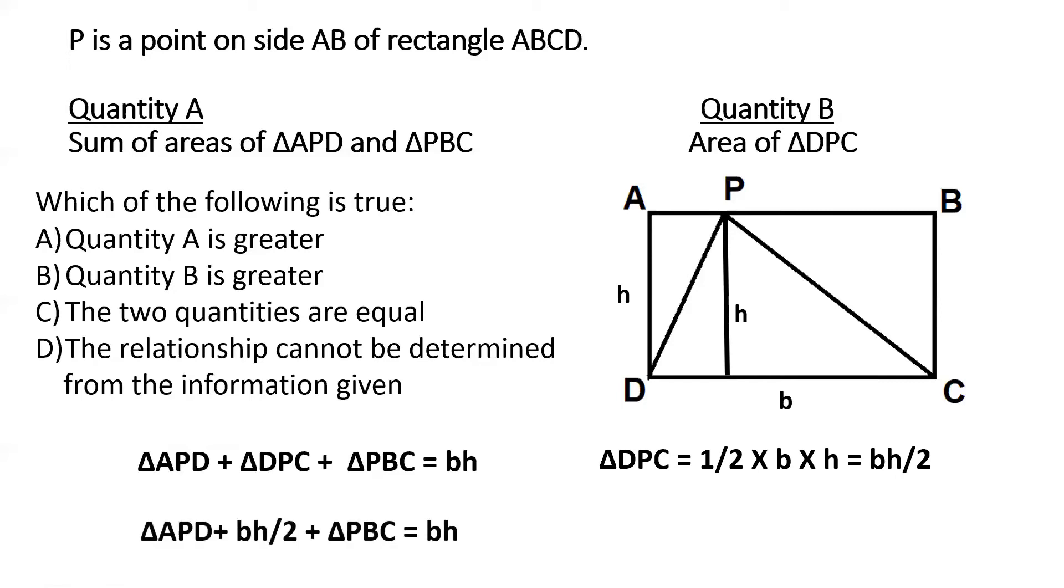Now, if we substitute that in this equation, we get triangle APD plus BH by 2 plus triangle PBC equal to BH. And from this one, we know that triangle APD plus triangle PBC is equal to BH minus BH by 2. So that's BH by 2. And this is the same as the area of triangle DPC. So the correct choice for this particular question would be C. The two quantities are equal.